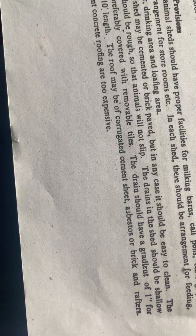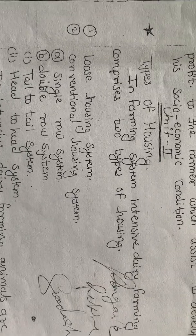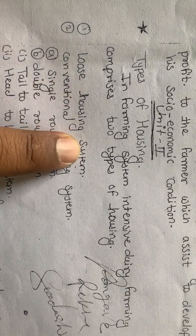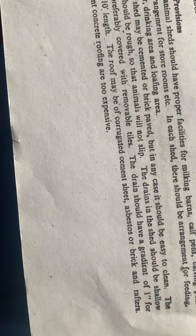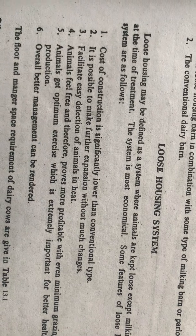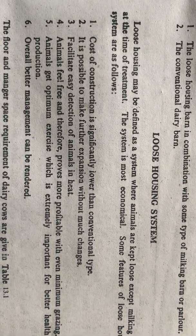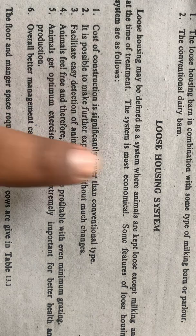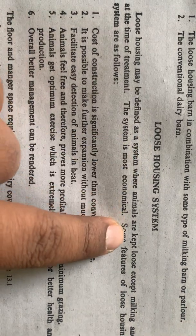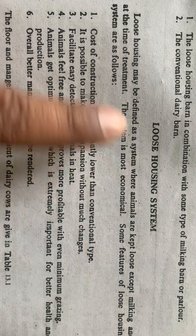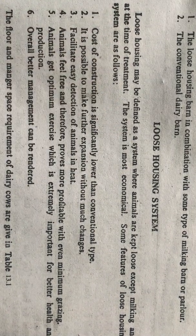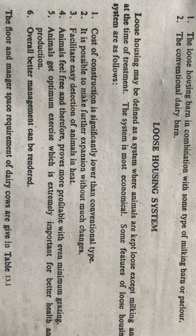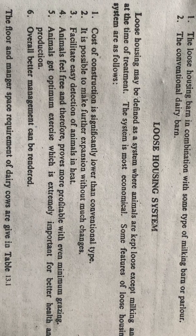There are two different types of housing system. Number one is the loose housing system, and the second one is the conventional housing system. The loose housing system may be defined as a system where the animals are kept loose except during milking and at the time of treatment.